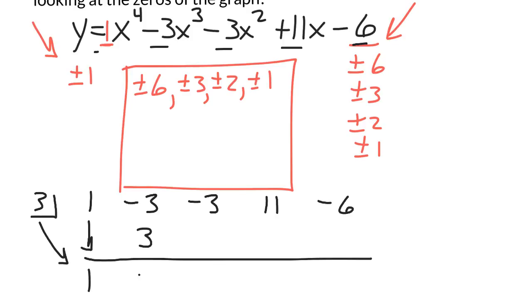Adding down, 0, 3 times 0 is 0, writing it here. Negative 3 added to 0 is negative 3, 3 times negative 3 is negative 9, that's 2, that's 6, that's 0. So what we learn from this is that 3 is one of the zeros.